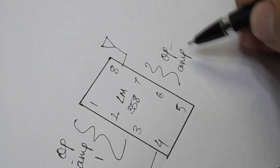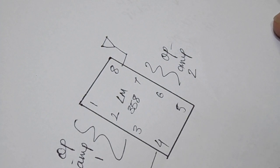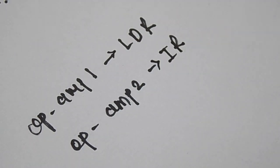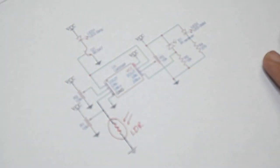Pins 5, 6, 7 are op amp 2. We will use op amp 1 for automatic light and op amp 2 for IR sensor.